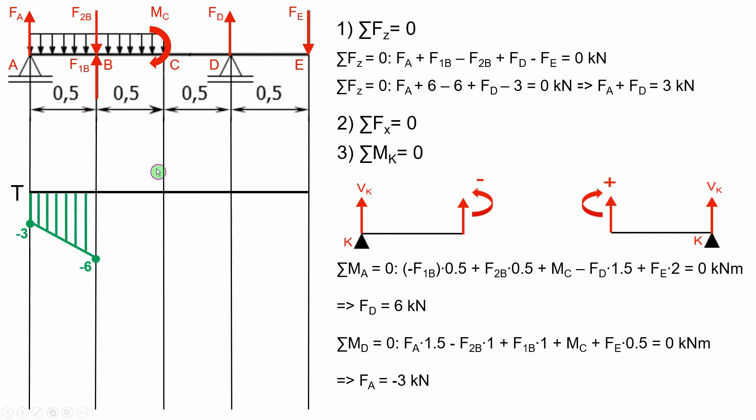On BC section there is this F1B force that acts upwards. That's why from minus 6 we get 0. After that we have the same load of 6 kN per meter acting on another 0.5 meters of the beam. So from 0 we go to minus 3.